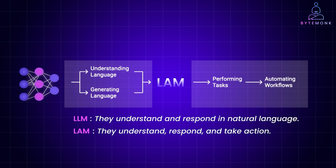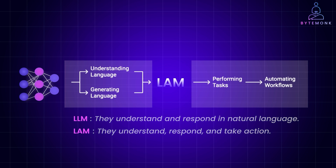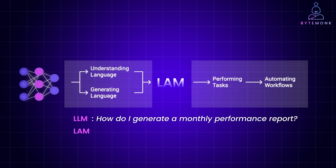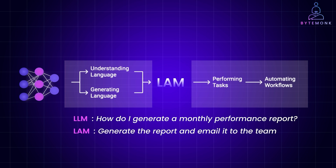Imagine you are managing a team. With an LLM, you might ask, 'How do I generate a monthly performance report?' and it will provide the steps. But with a LAM, you can ask, 'Generate the report and email it to the team,' and it handles everything from fetching the data to hitting send.